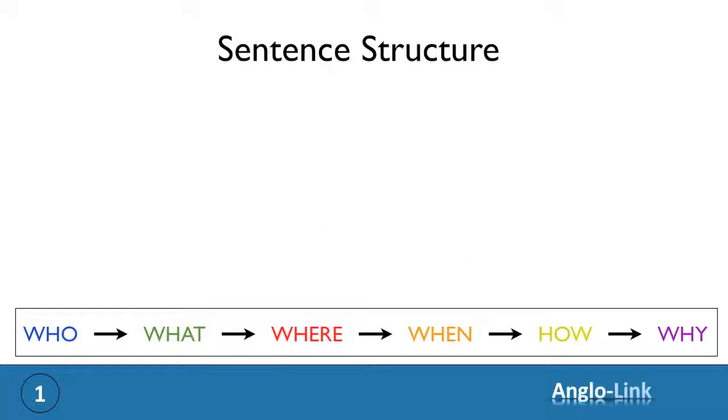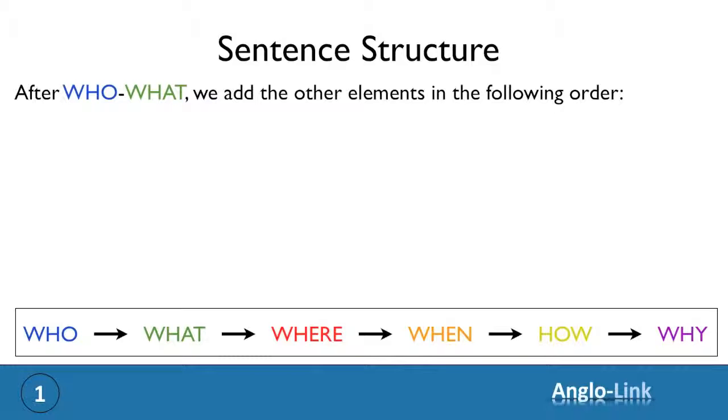Now once you have your basic structure with who and what, you can add the other elements in the following order: where, when, how and why. Now not every sentence will have all these four elements. There will be a selection of them in each sentence.